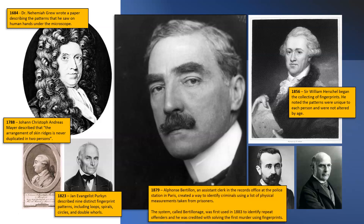In 1879, Alphonse Bertillon, who was an assistant clerk in the records office of a police station in Paris, created a way to identify criminals using a list of physical measurements taken from prisoners. The system called Bertillionage was first used in 1883 to identify repeat offenders, and he was credited with solving the first murder using fingerprints. From that point on, fingerprint analysis became a facet within forensic science as a whole.